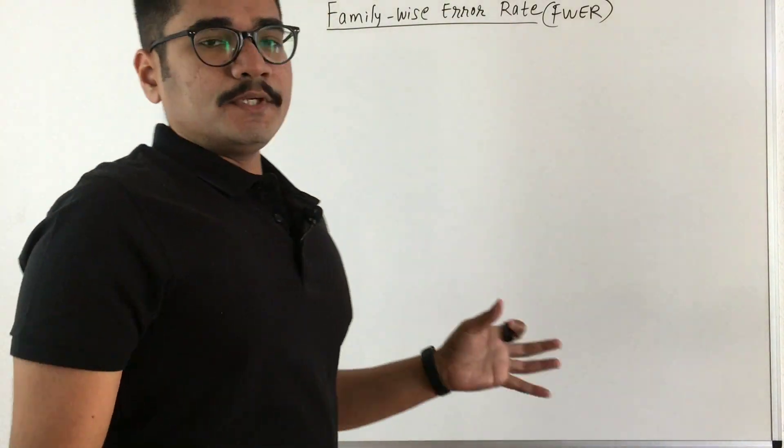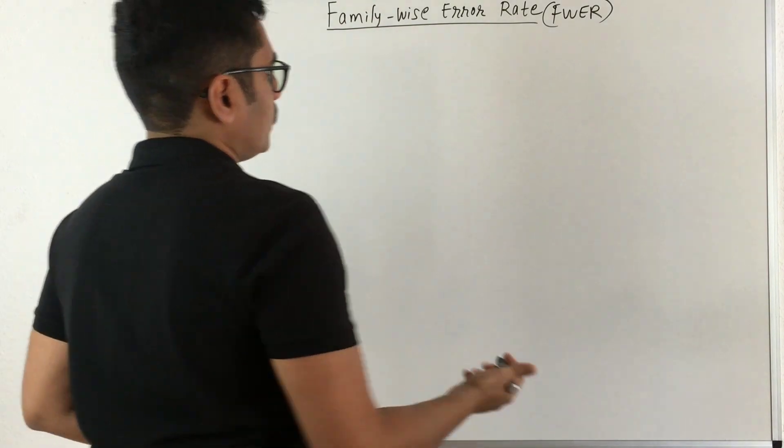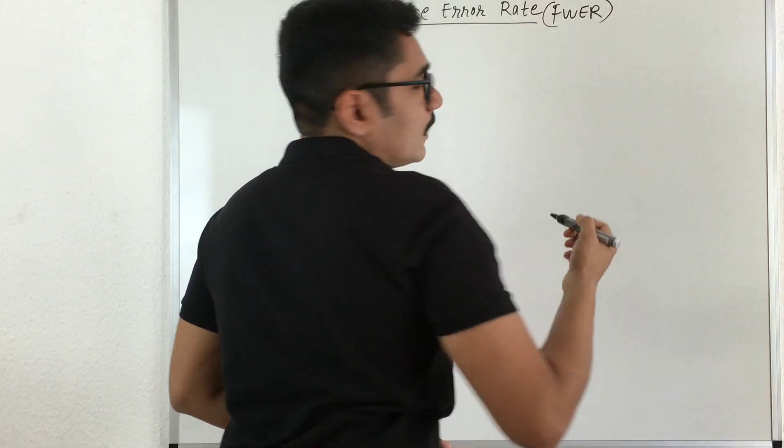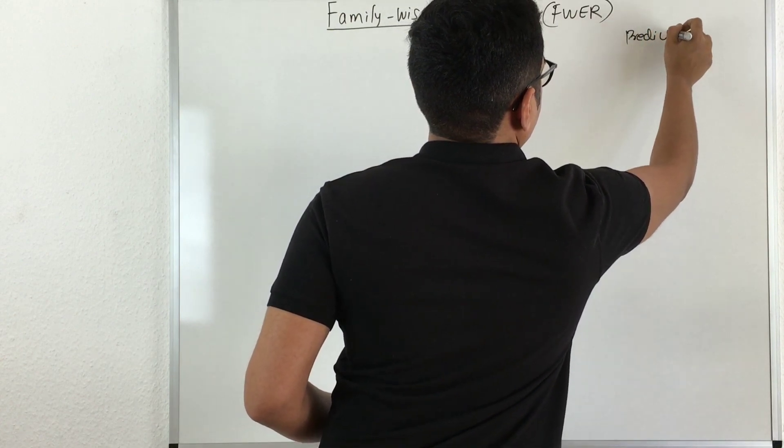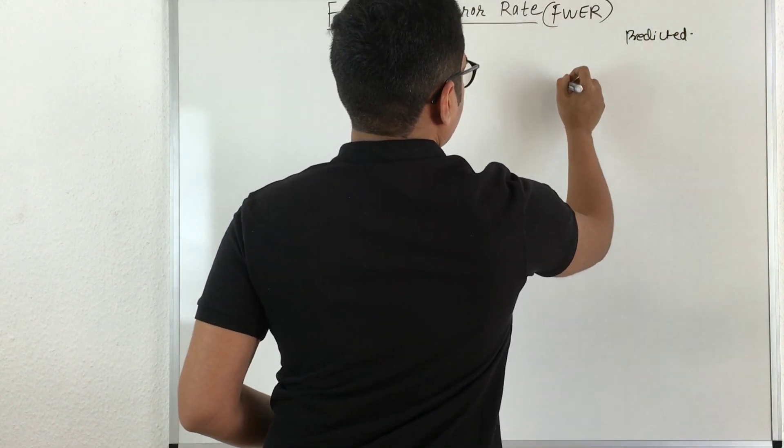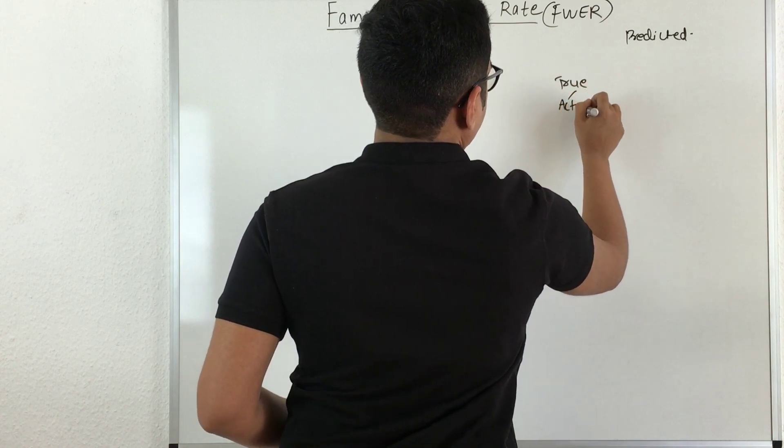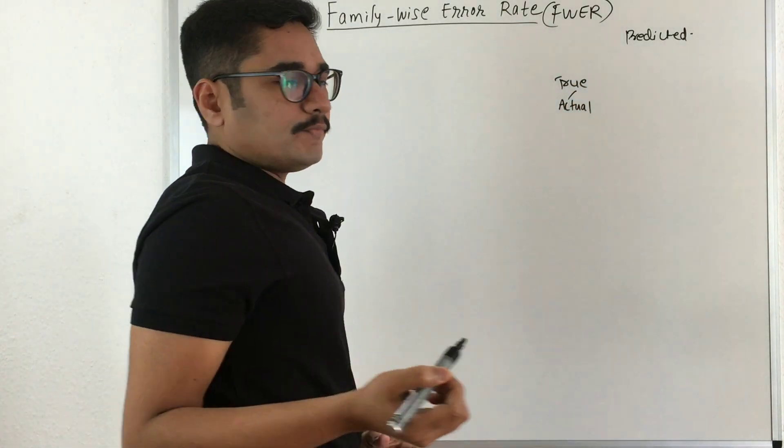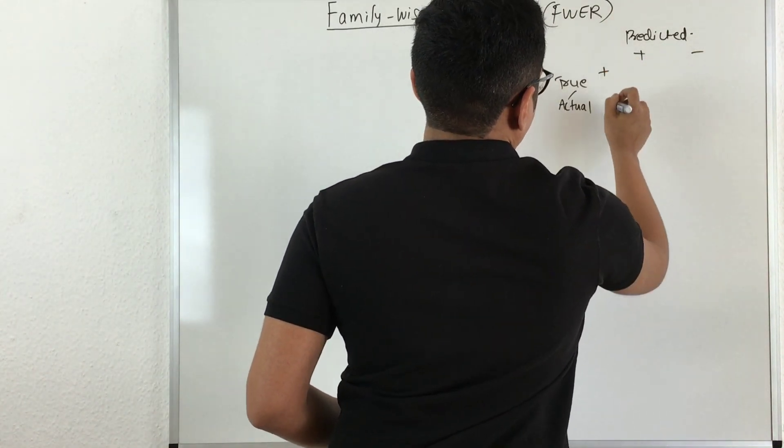So for this video, let's reconstruct that confusion table or confusion matrix. We have our predicted class at the top and here we have the true class or the actual one, and we take two different classes: positive and negative, similarly here positive and negative.